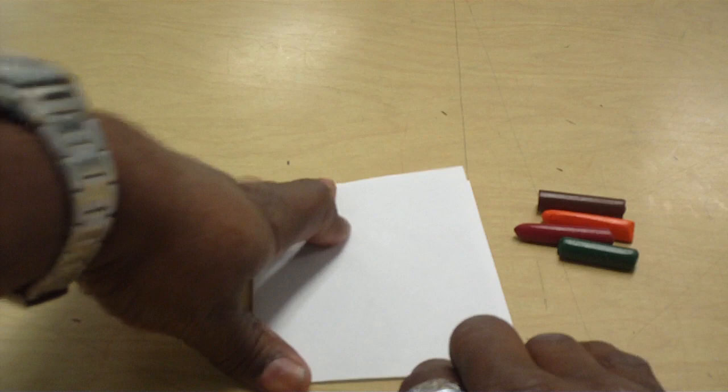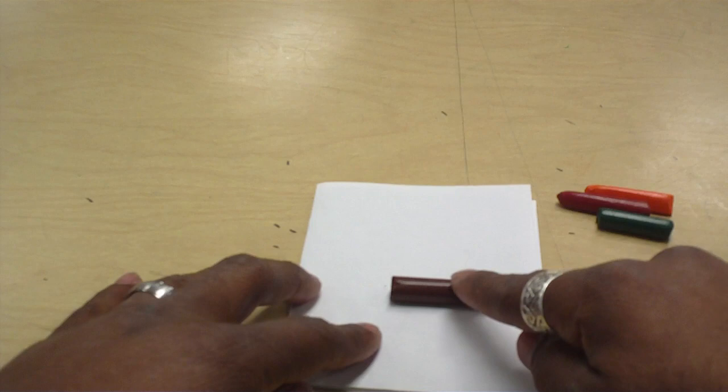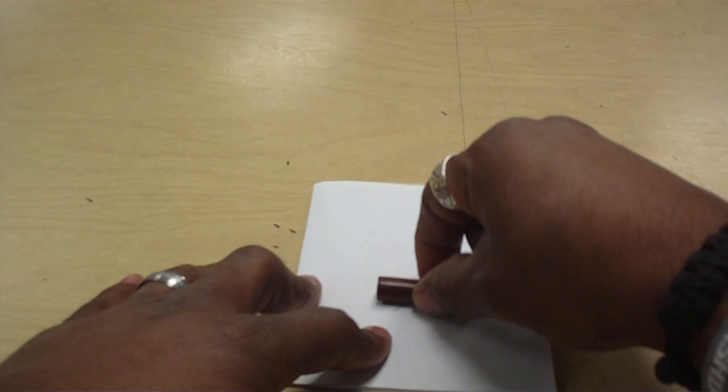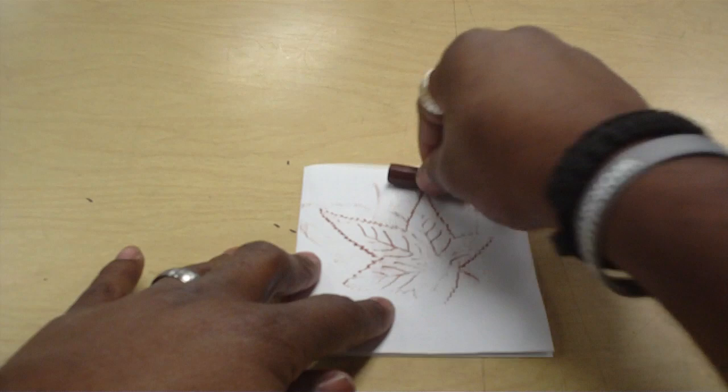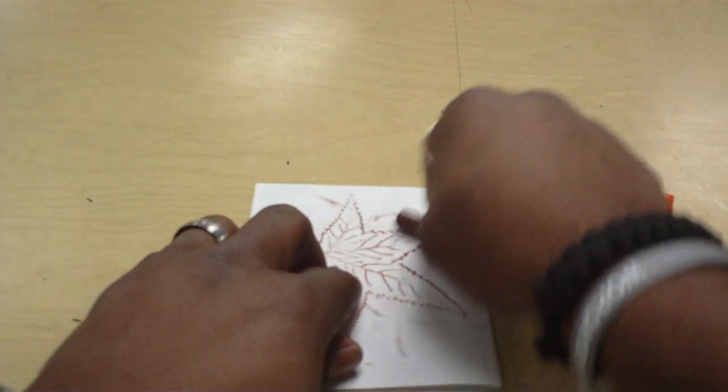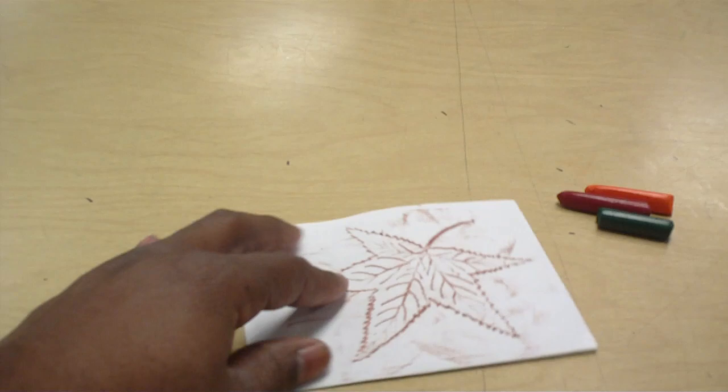All right as I start with brown now notice I'm going to leave my crayon on its side almost so that it can roll but I'm going to stop it from rolling and I'm going to rub. You're going to rub, rub, rub all over that leaf that's under there. What's going to happen is the leaf actually comes out on the paper like that. How cool is that? It's almost like magic.